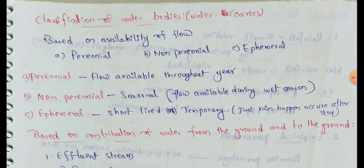Perennial streams flow continuously every year — the stream is perennial and continues flowing. These rivers, for example in India: Ganga river, Brahmaputra river, Kaveri river, Godavari river, Krishna river — these are perennial rivers, flowing through the year.